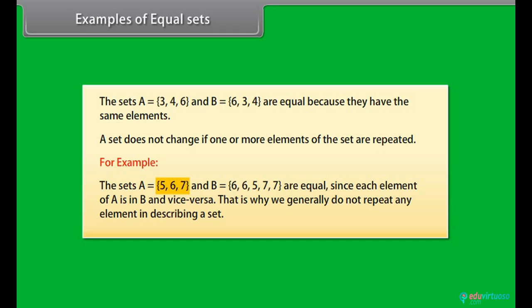For example, the sets A equals 5, 6, 7 and B equals 6, 6, 5, 7, 7 are equal since each element of A is in B and vice versa. That is why we generally do not repeat any element in describing a set.